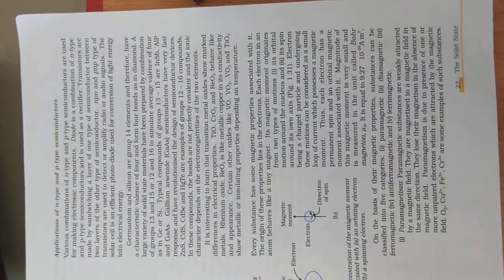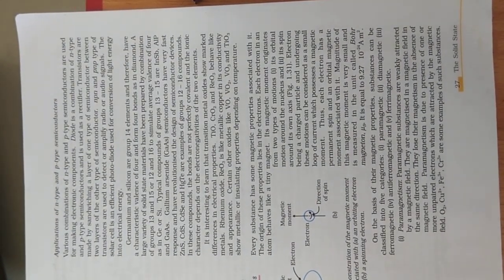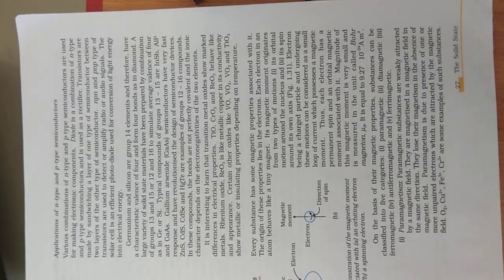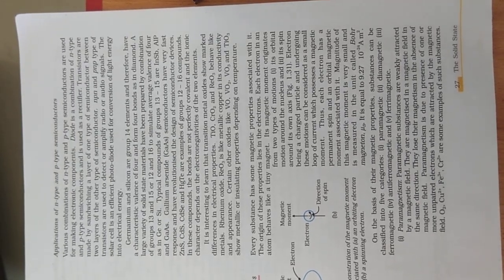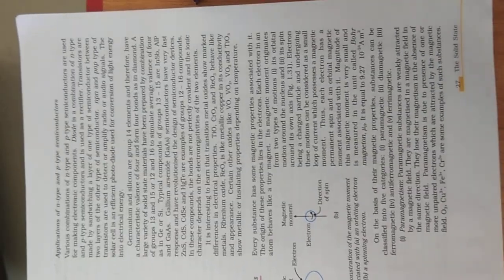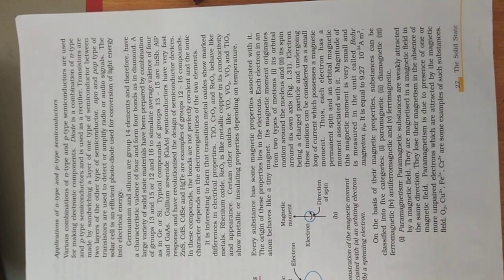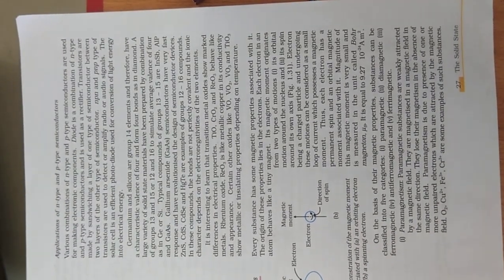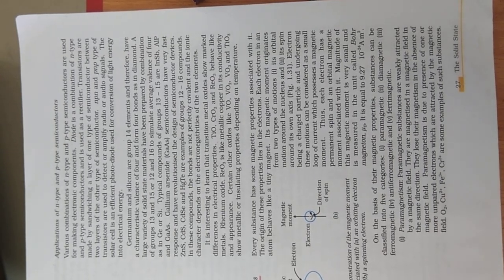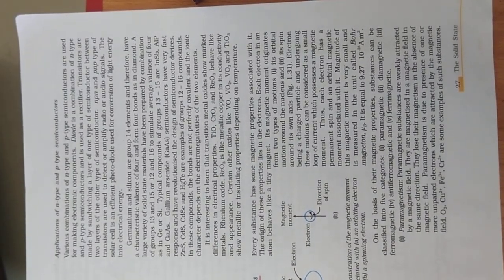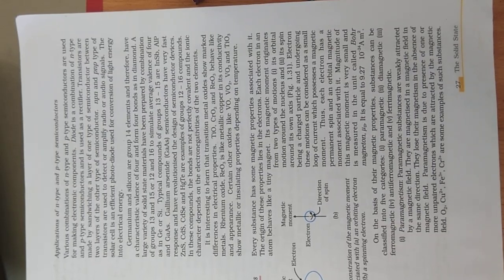Some semiconductors use 12 and 16 group element combinations. Certain metal oxides such as TiO, CrO2, and ReO3 behave like metals in terms of conductivity. However, others like VO2, VO3, and TiO3 show temperature-dependent conductivity behavior, transitioning between metallic and insulating character.